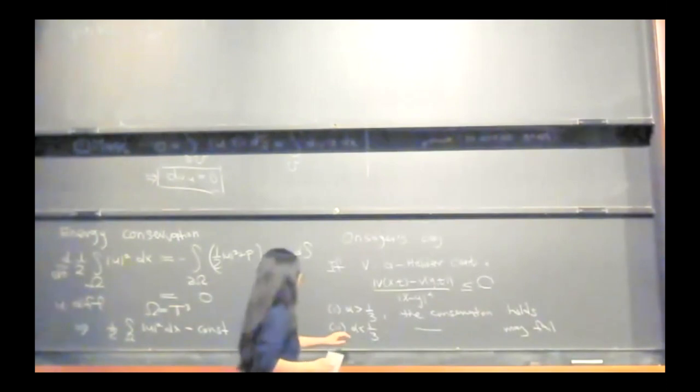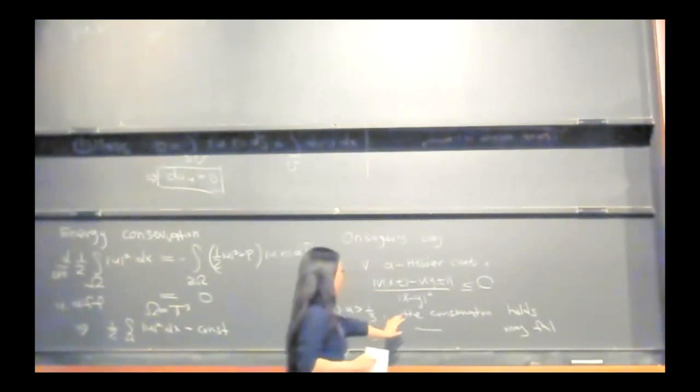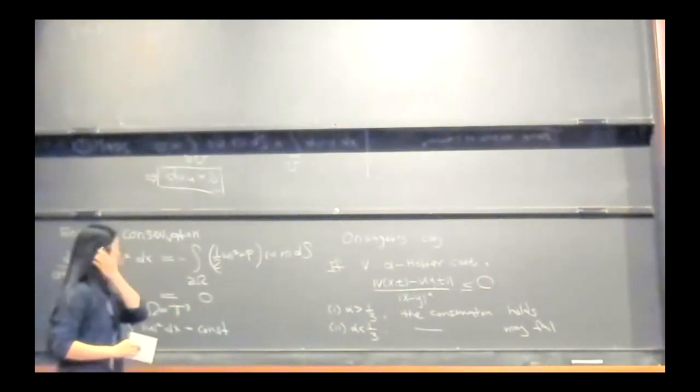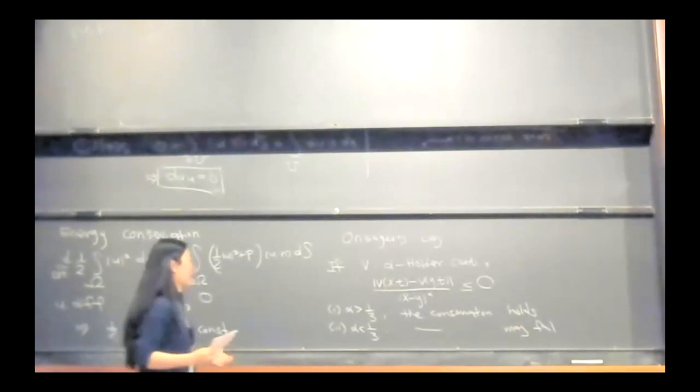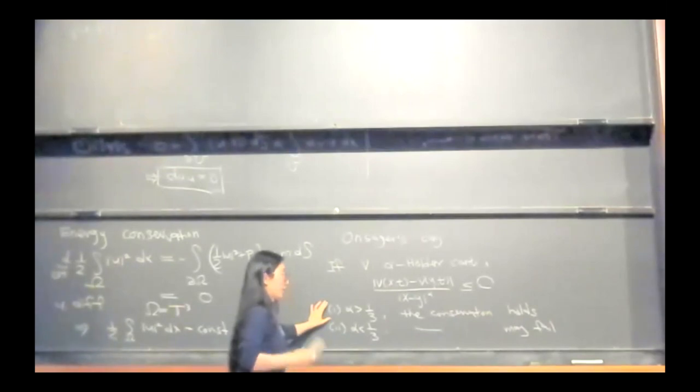While if alpha is less than one third, the conservation may fail. For each alpha, one could construct an alpha Hölder continuous velocity for which total kinetic energy is not conserved.